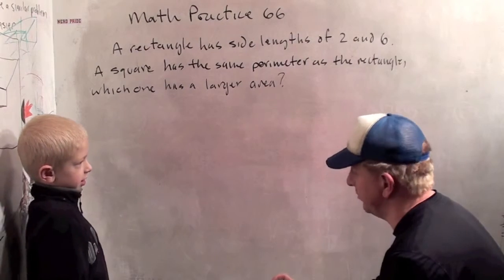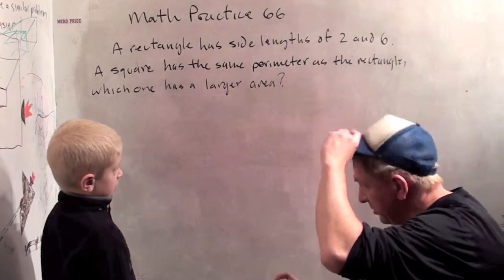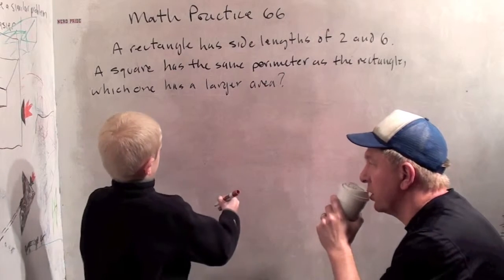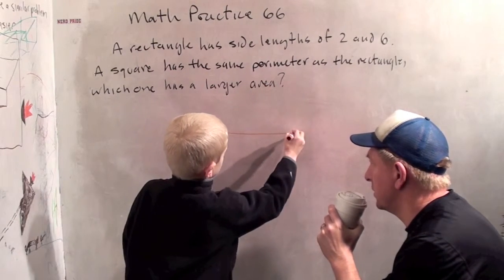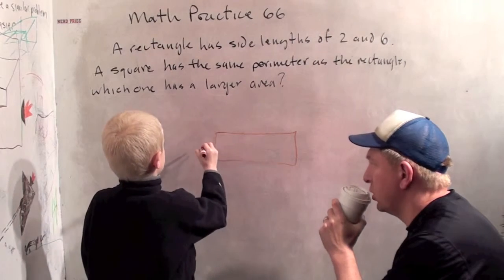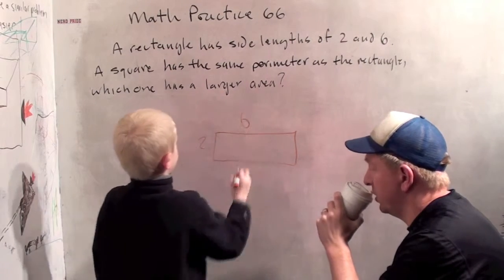It was a pretty interesting problem. Alright, how do you want to approach it? Let's draw a picture like we did last time. Okay. This would be 2 and this would be 6. Very good.